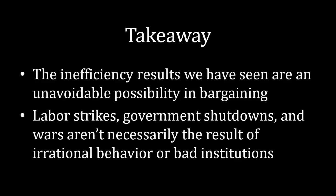Applying this to the real world: if you think about labor strikes, government shutdowns, wars, or even your inability to negotiate a car price at a dealership — if you thought those things had to result from irrational behavior, that's not the case. Meyerson-Satterthwaite tells us this is an unavoidable outcome of negotiations. It doesn't necessarily result from irrationality or a badly structured negotiation. If there is any uncertainty about the other side's type and they're uncertain about yours, you unavoidably face some chance of an inefficient outcome. You just can't escape the fact that bargaining might result in inefficiency.